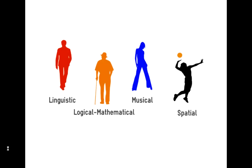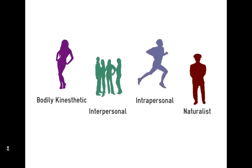Then we have spatial intelligence. An airline pilot would be a good example — this is about the visual perception of your environment and the ability to create and manipulate mental images. Next is bodily-kinesthetic intelligence. An athlete or a dancer would be a good example; the key point is physical coordination and dexterity.